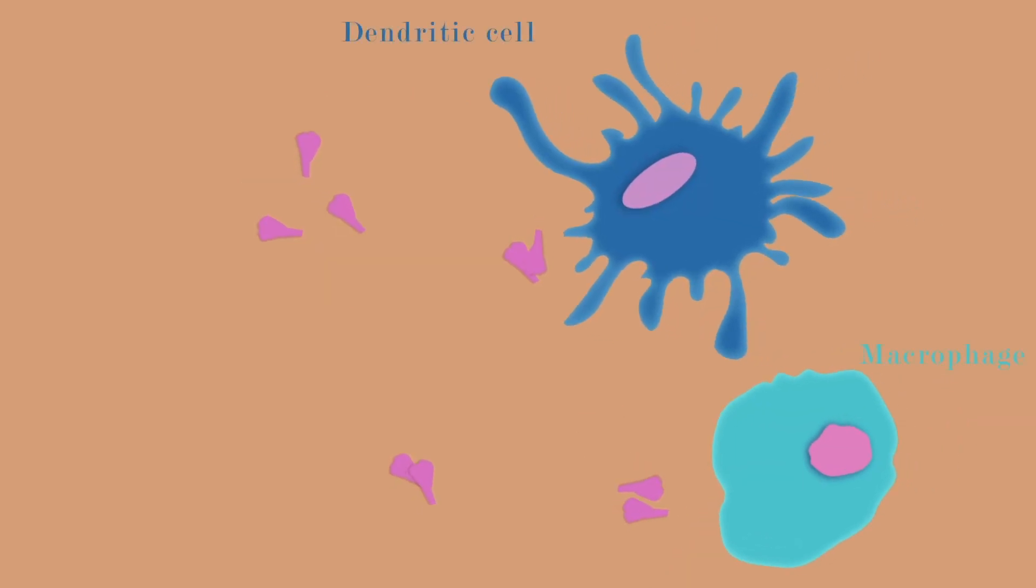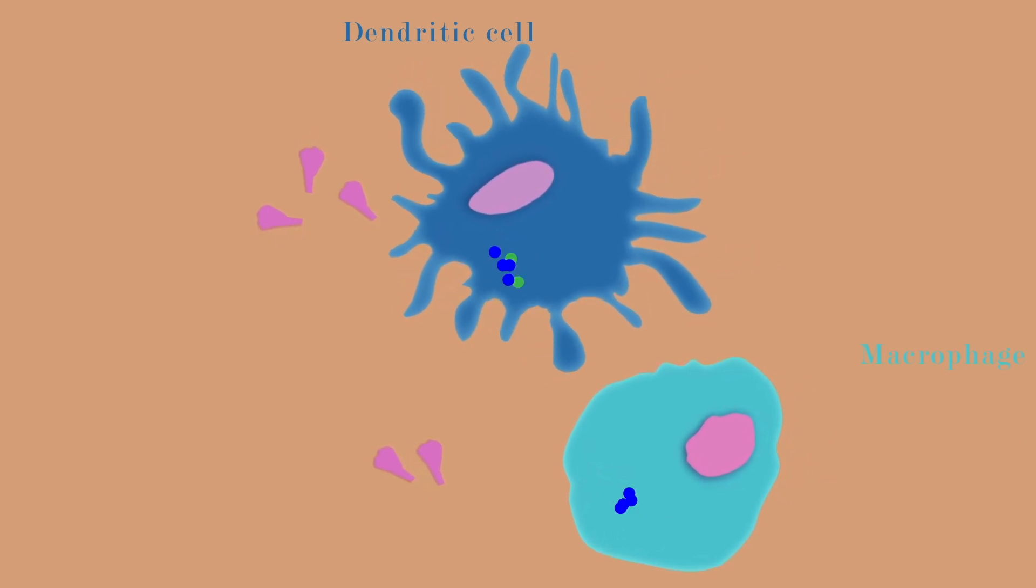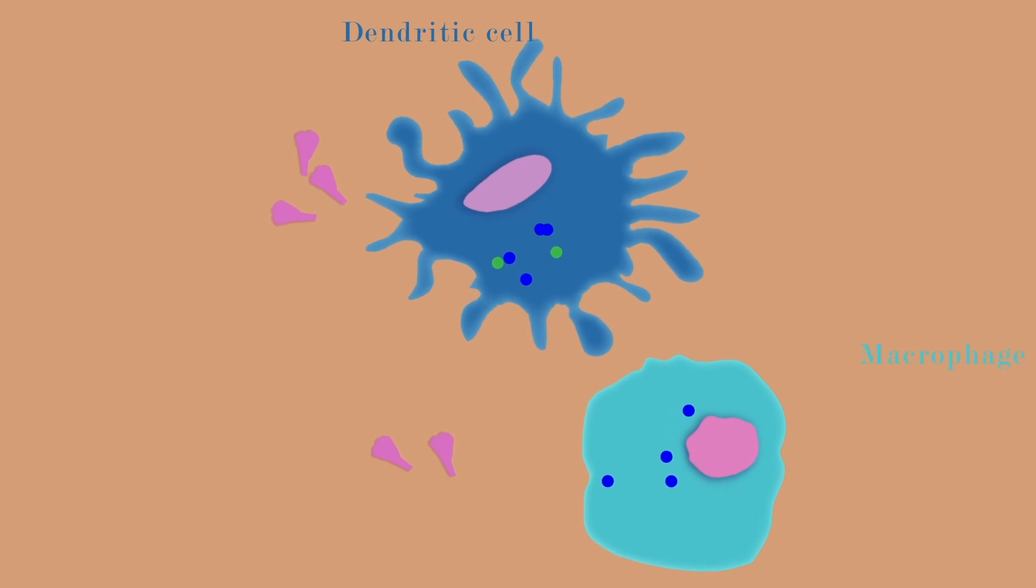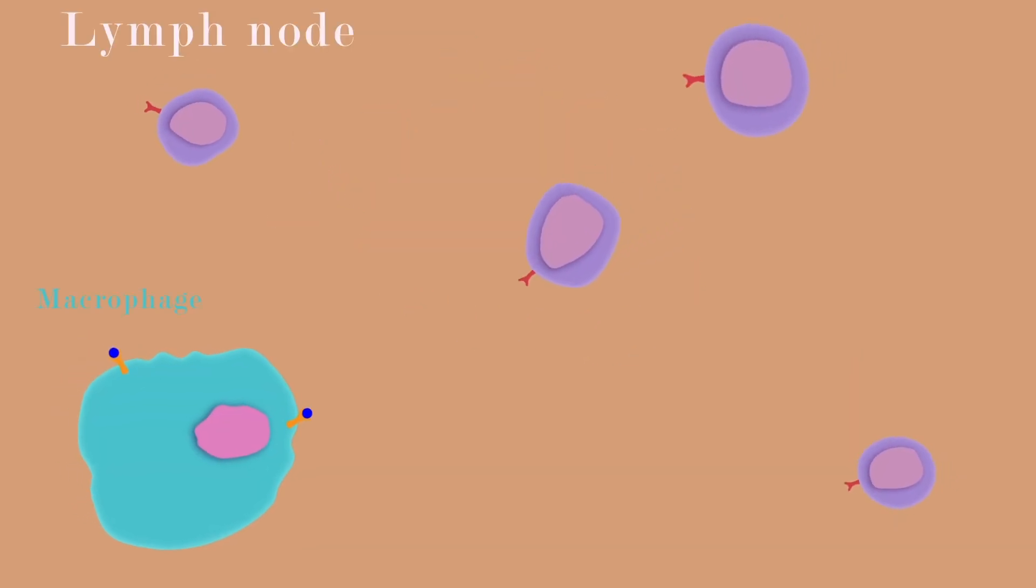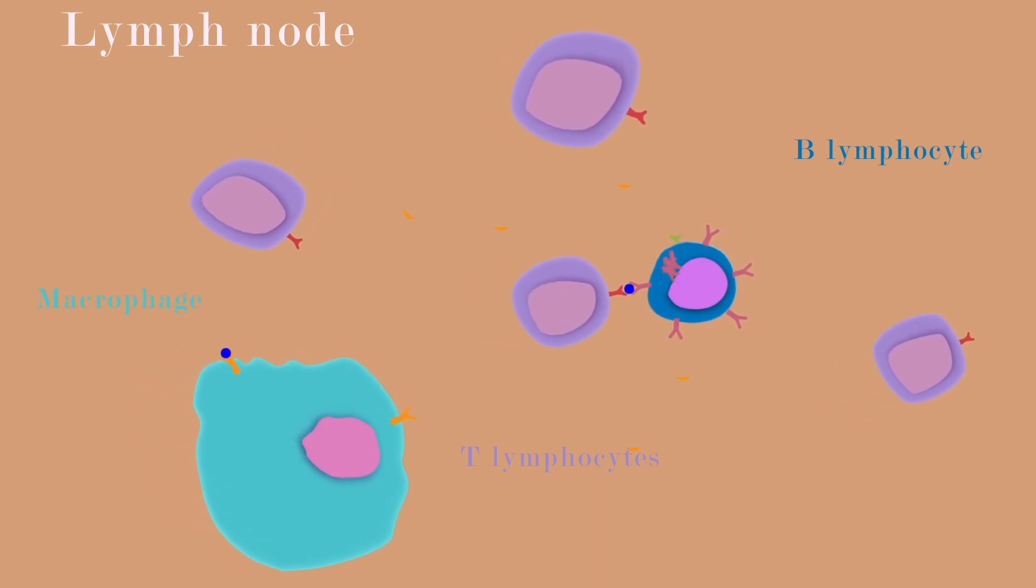Cells of our immune system take these proteins in and break them into small fragments. Then they transport them to the cell surface, then migrate to the lymph nodes, and present these fragments to another type of cells called T-lymphocytes. The T-lymphocytes do not recognize the fragments and initiate a series of events that leads, among other things, to the production of antibodies by B-lymphocytes.